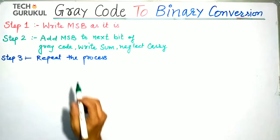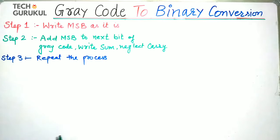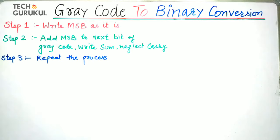The first step is to write the MSB as it is — whatever we are given in the MSB, we write it as it is for the binary number. Then add the MSB to the next bit of the gray code and write down the sum, neglecting the carry. We repeat the same process again and again.